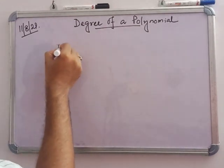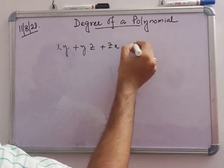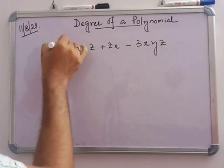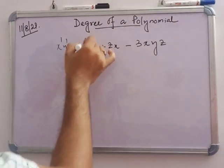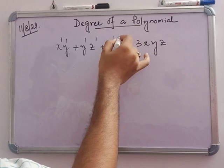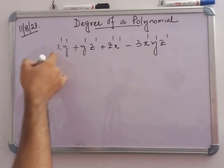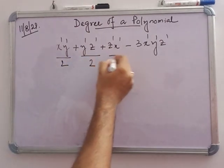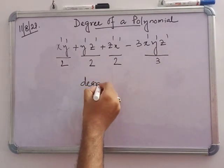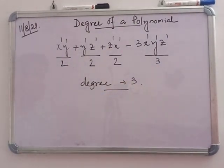For example, consider xy plus yz plus zx minus 3xyz. In terms like xy, yz, and zx, the sum of powers in each term is 2. In 3xyz, the sum of powers is 1 plus 1 plus 1 equals 3. So the highest power sum is 3, and the degree is 3.